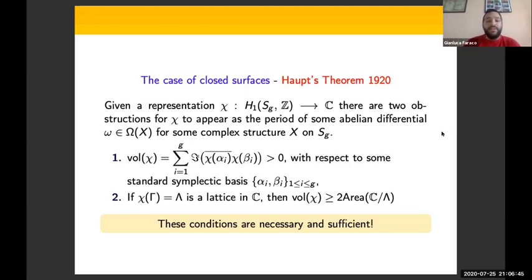What Aut noticed is that there are basically two obstructions for a character χ to be the period of an abelian differential. The first is that a certain quantity, which is a real number, has to be strictly positive with respect to some standard symplectic basis, and this quantity is called the volume of χ.